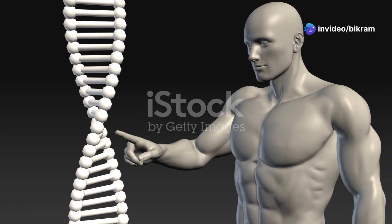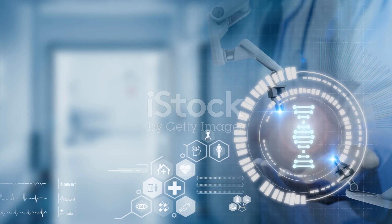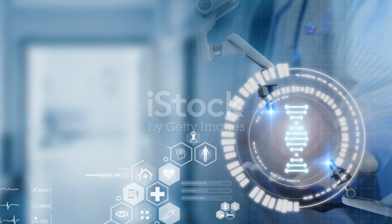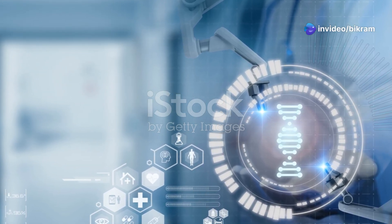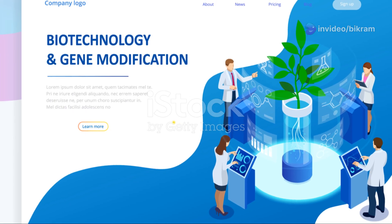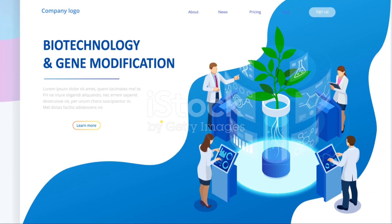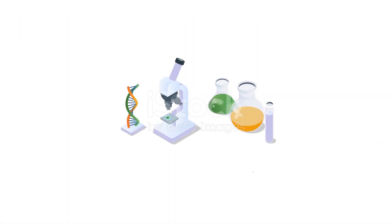To sum it all up, Griffith's experiment was a turning point in genetics. Although he didn't identify DNA himself, his pioneering work paved the way for later scientists to uncover that DNA carries genetic information. This discovery has been foundational for advances in molecular biology, genetic engineering, and biotechnology. Thanks for tuning in and keep exploring the wonders of science. Don't forget to like, comment, and subscribe for more fascinating stories from the world of science.